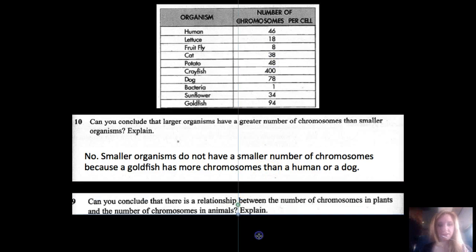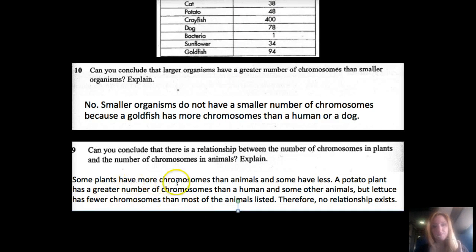Number nine: Can you conclude that there's a relationship between the number of chromosomes in plants and the number of chromosomes in animals? Explain. Let's look at this again. Human: 46, lettuce: 18, potato: more. There's more chromosomes in a potato than a human. There's fewer chromosomes in lettuce. Can there be an actual relationship there? No. Some plants have more chromosomes than animals, and some have less. A potato plant has a greater number of chromosomes than a human and some other animals, but lettuce has fewer chromosomes than most animals listed. Therefore, no relationship exists. And our secret word for this video is sunflower.